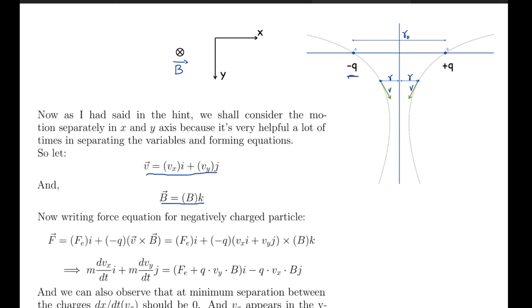So now writing the force equations for the negatively charged particle, what we get is F vector equals to Fe i cap - Fe here is the electrostatic force due to the other charge - plus minus q times v cross B, the force due to the magnetic field. Which equals to Fe i cap plus minus q times (vx i cap plus vy j cap) cross B k cap.